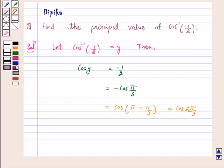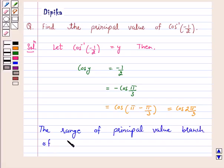Now we know that the range of principal value branch of cos inverse is close interval 0 to pi.